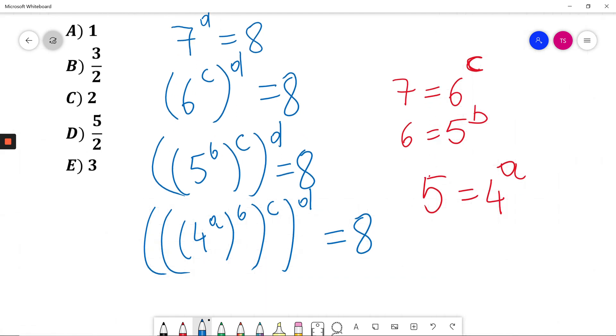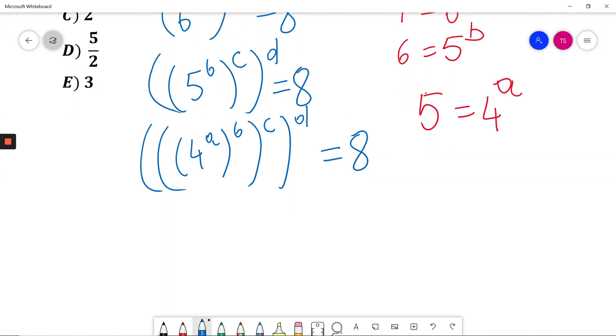I will simplify it. Now I'm using the power to power rule. I have 4 to power of A times B times C times D, and this is equal to 8.